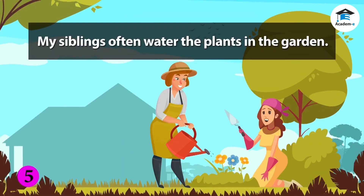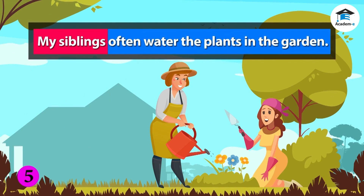'My siblings often water the plants in the garden.' Who water the plants often? My siblings. What do my siblings do? They water the plants often. This is an example of a sentence, for it has a complete thought.